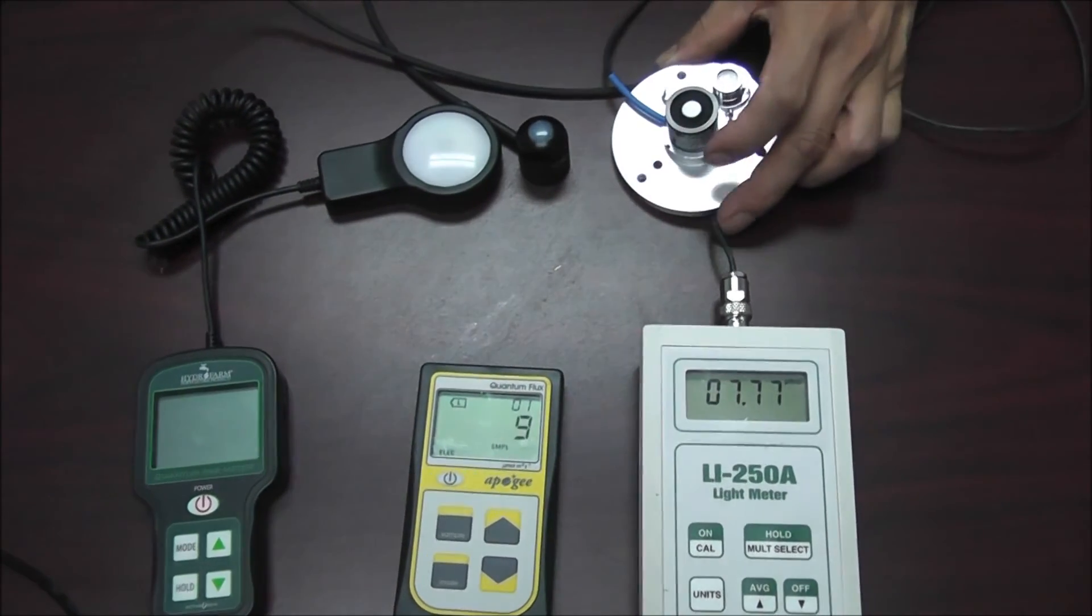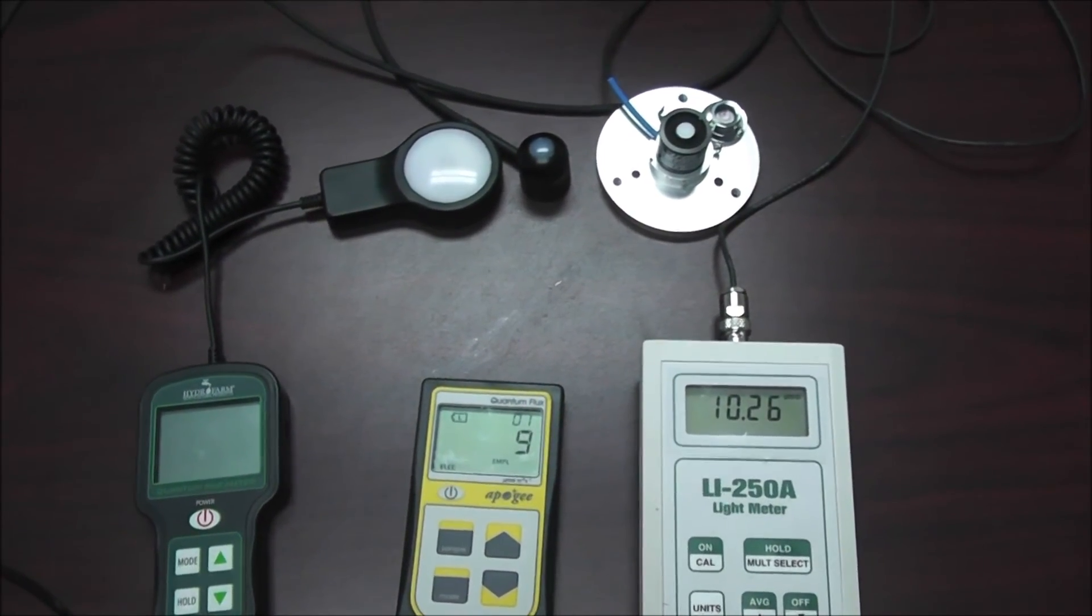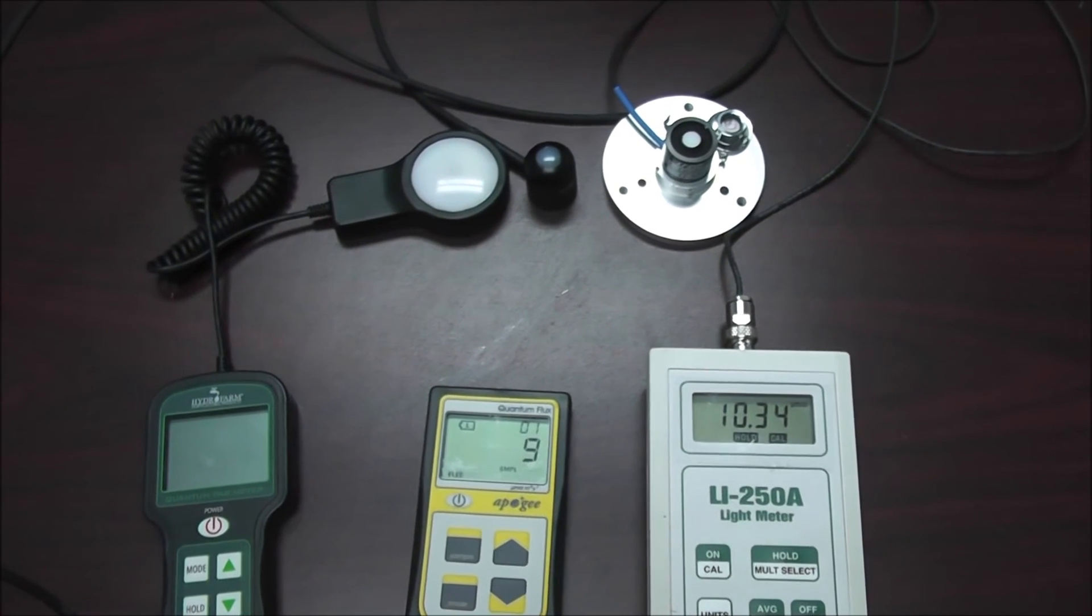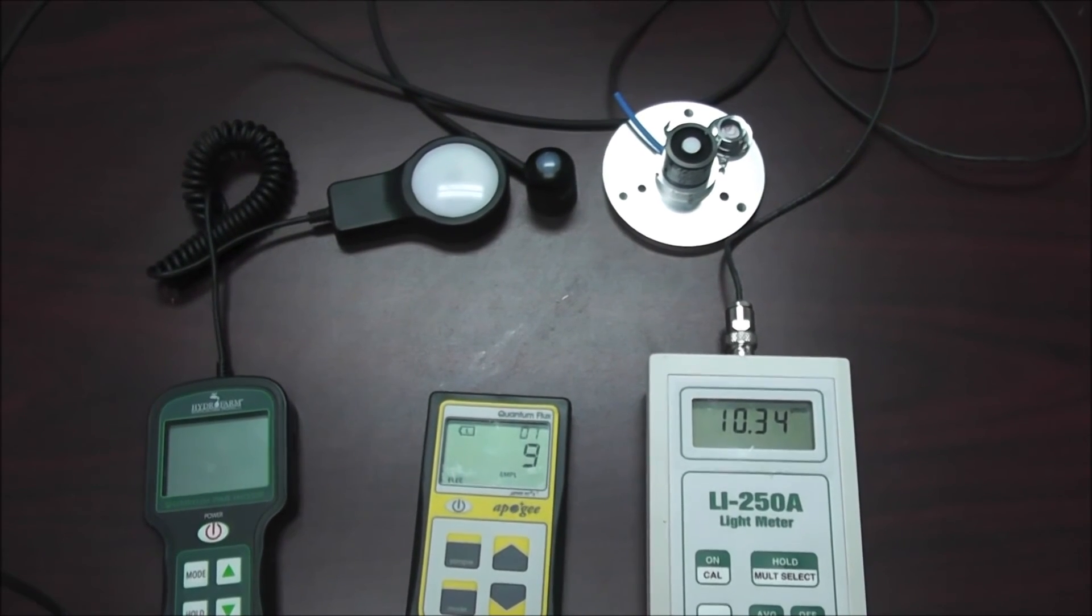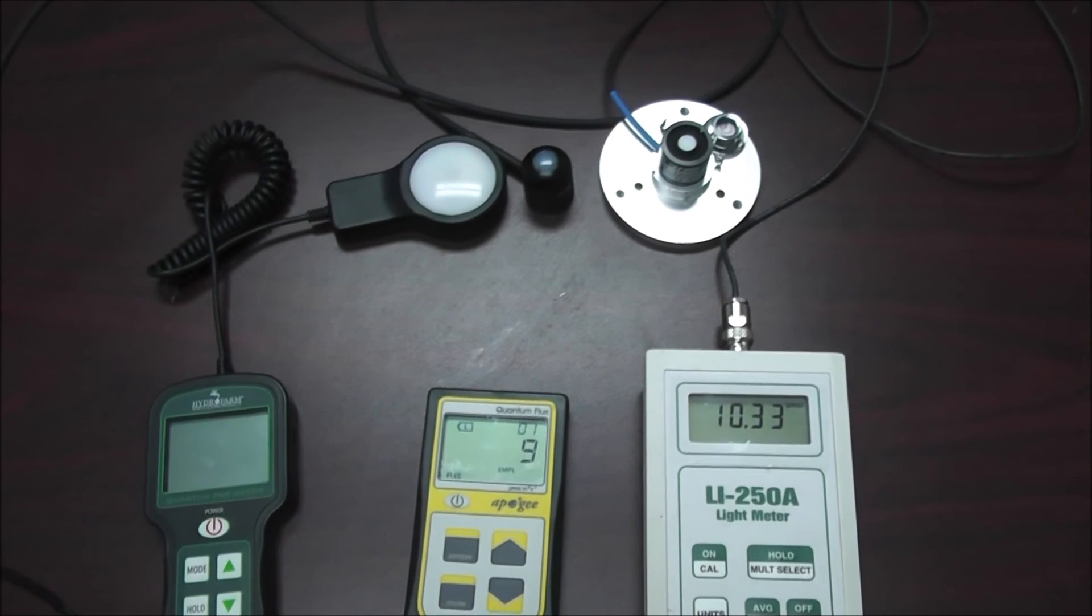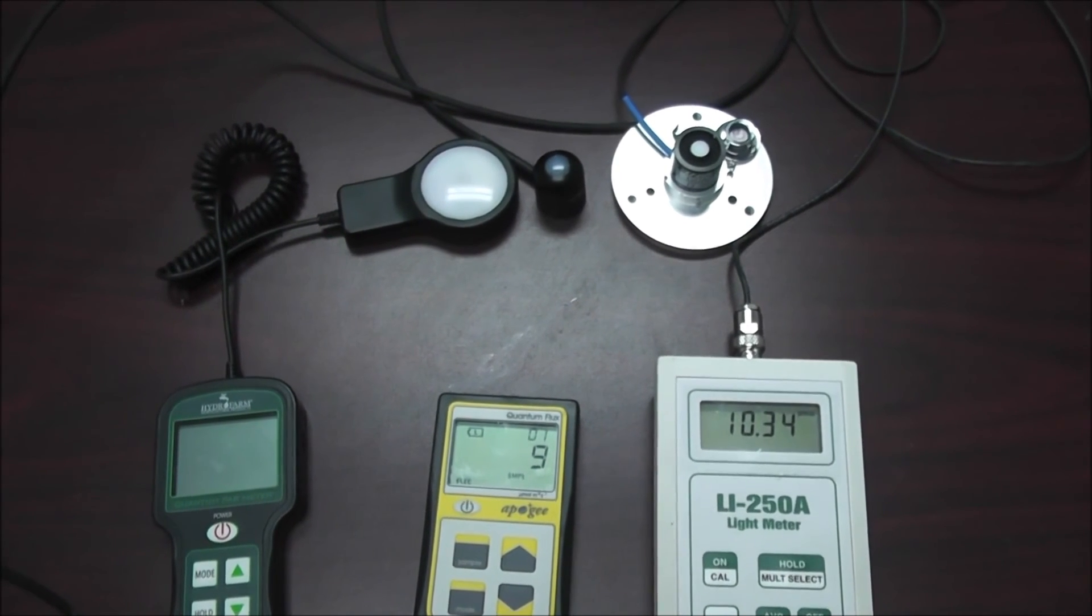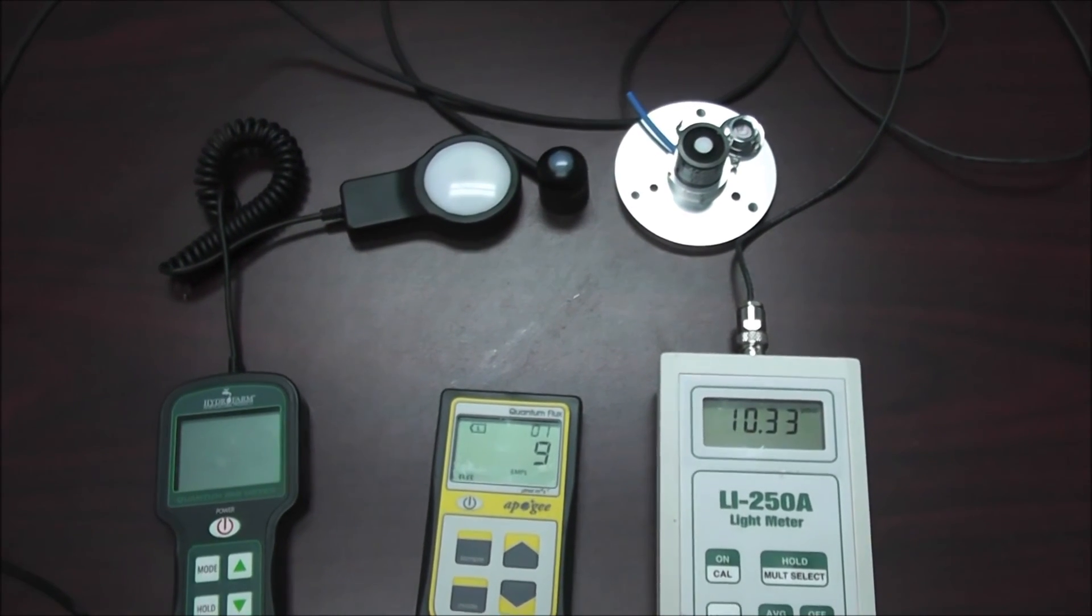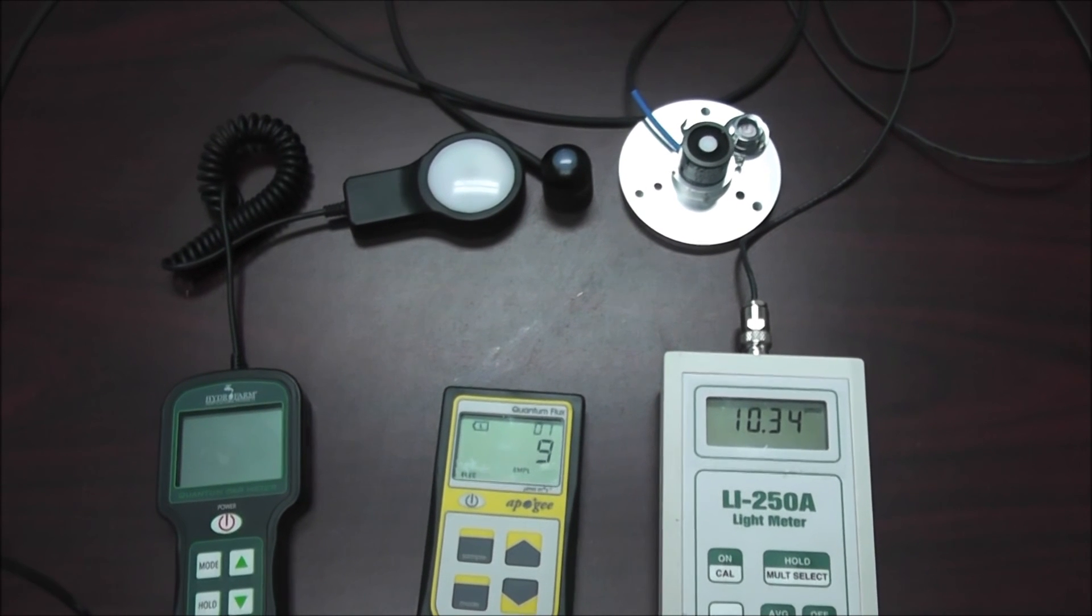So now if you do simple mathematics, 10.4 minus 1.3, you got 9.1, which agrees with the Apogee quantum meter.